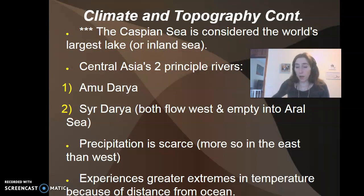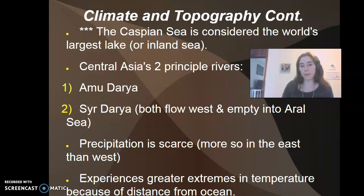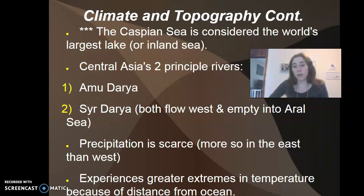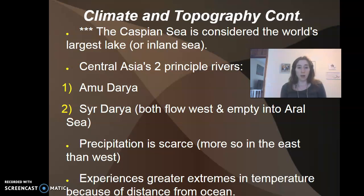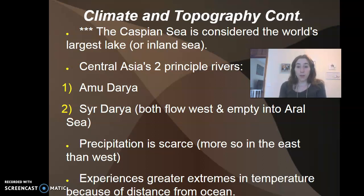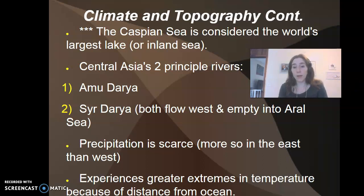The Caspian Sea is considered the world's largest lake or inland sea. The two principal rivers of Central Asia are the Amu Darya and the Syr Darya, and both are important to the area. Water is always important to whichever area it's in, and it's important to recognize that these two rivers are very significant to this region.